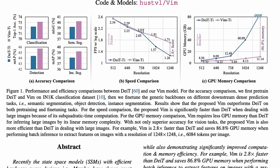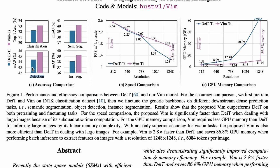Looking purely at the benchmarks, they have downstream tasks like classification, semantic segmentation, and detection. Comparing DeiT and VIM across a couple of benchmarks, Vision Mamba scores above in every single instance compared to the existing transformer equivalent. VIM outperforms the transformer-based models across all tasks.